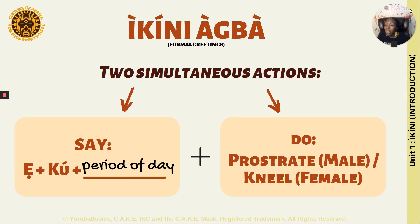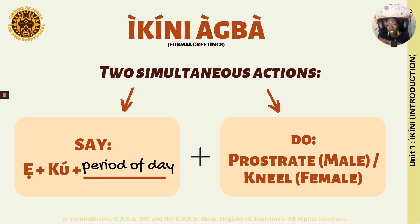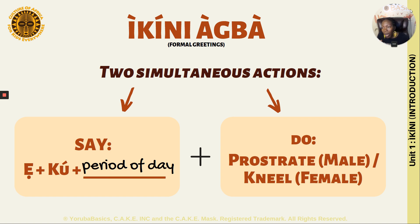In Yoruba, what you would say to someone is usually preceded by E KU, and then the period of the day. So if you're talking to someone in the morning, it's E KU ARO. If it's afternoon, which is OSON, you say E KU OSON. If it's evening, E KU ALE.